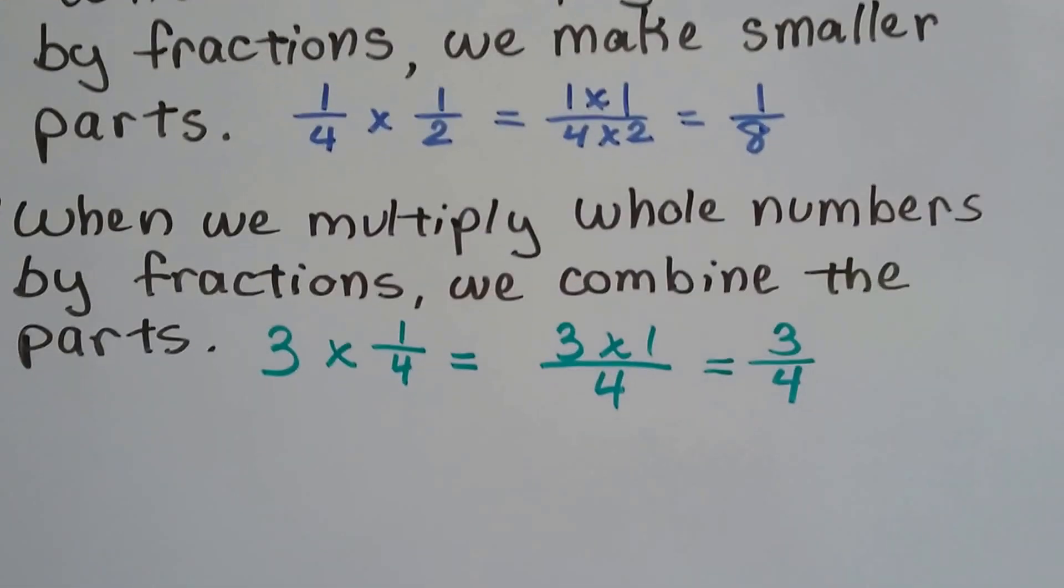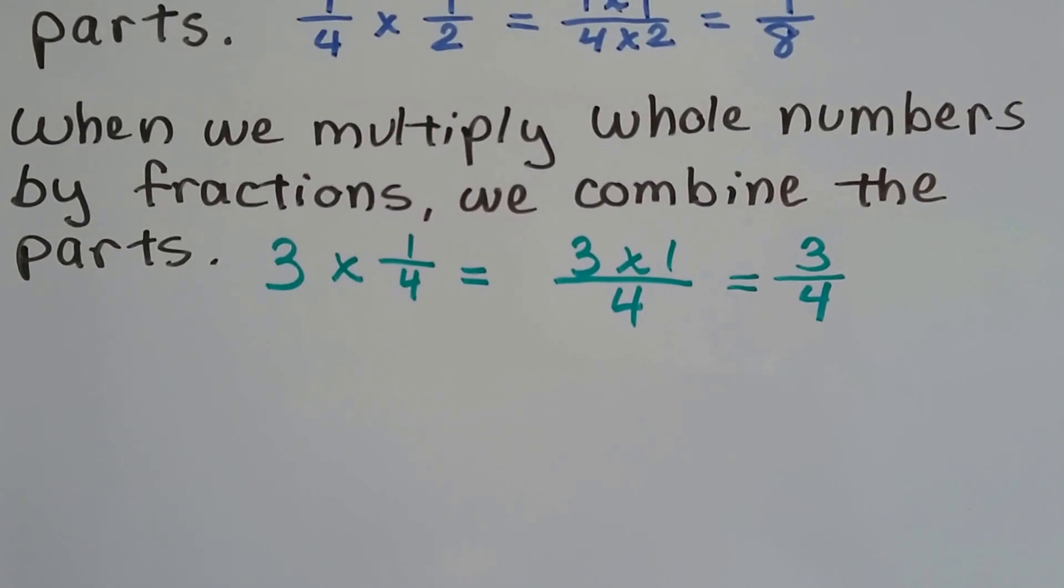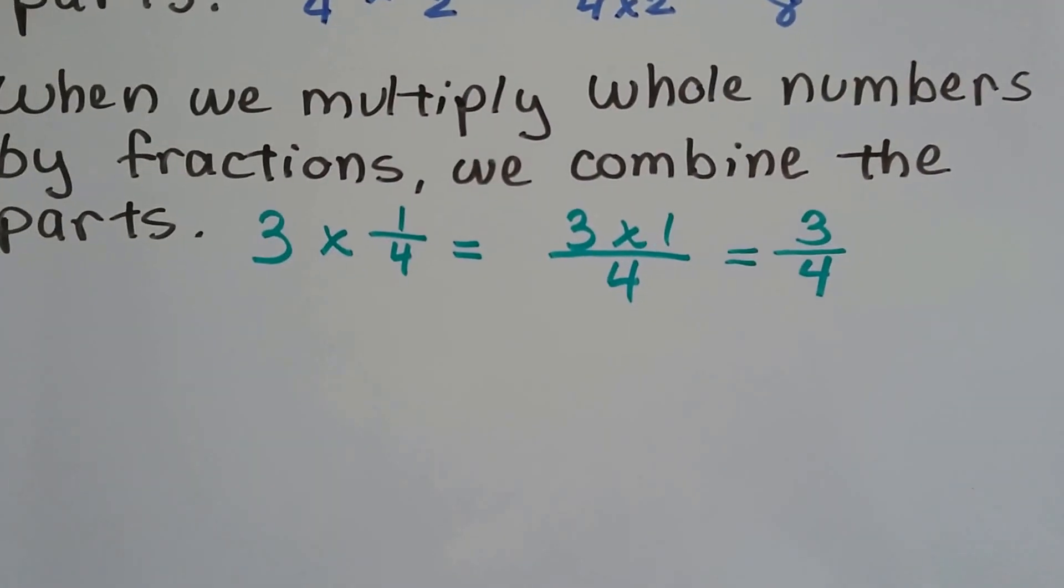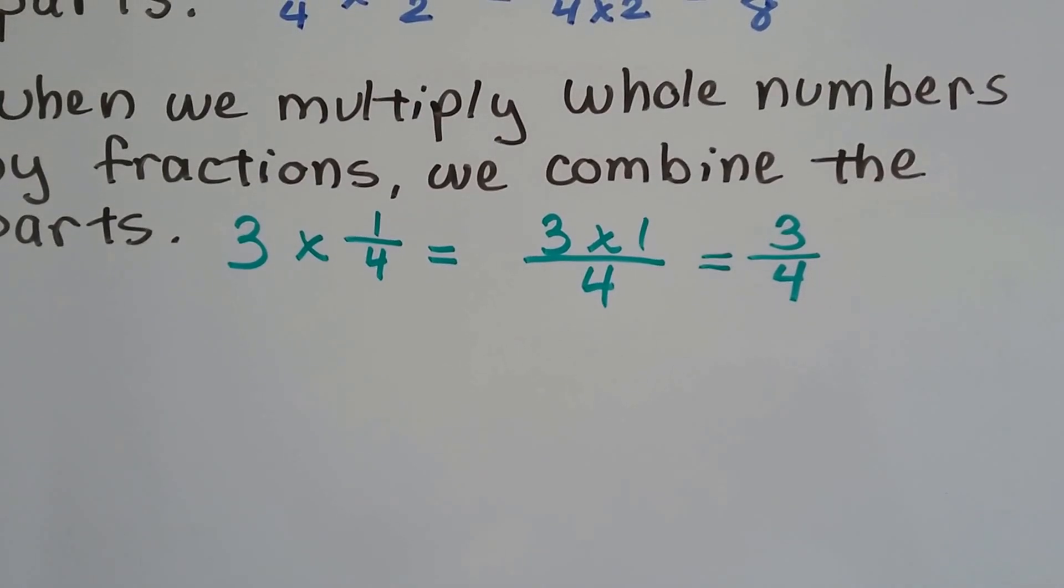When we multiply whole numbers by fractions, we combine the parts. 3 times 1/4 is 3 times 1 over 4. It's 3/4.